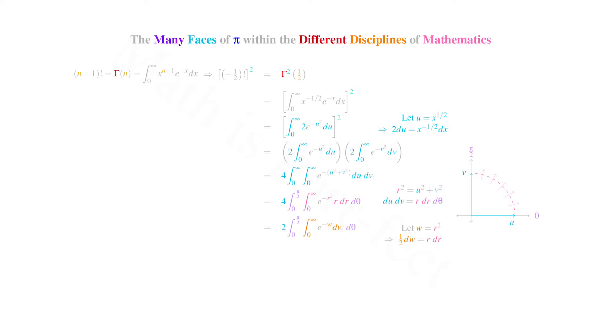I then let w be equal to r squared, giving us 1 half dw equal to r dr. The limits on w are the same as those on r, hence our double integral now has an integrand e to the minus w dw times d theta. And the 4 on the outside simplifies to 2 after multiplication by 1 half.